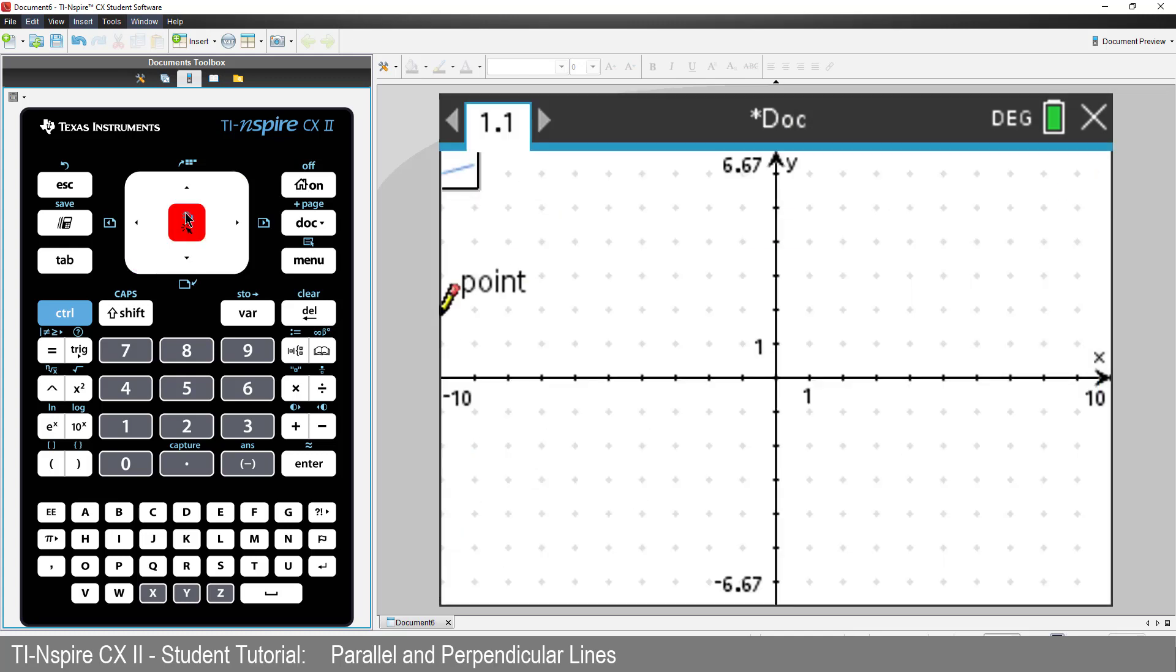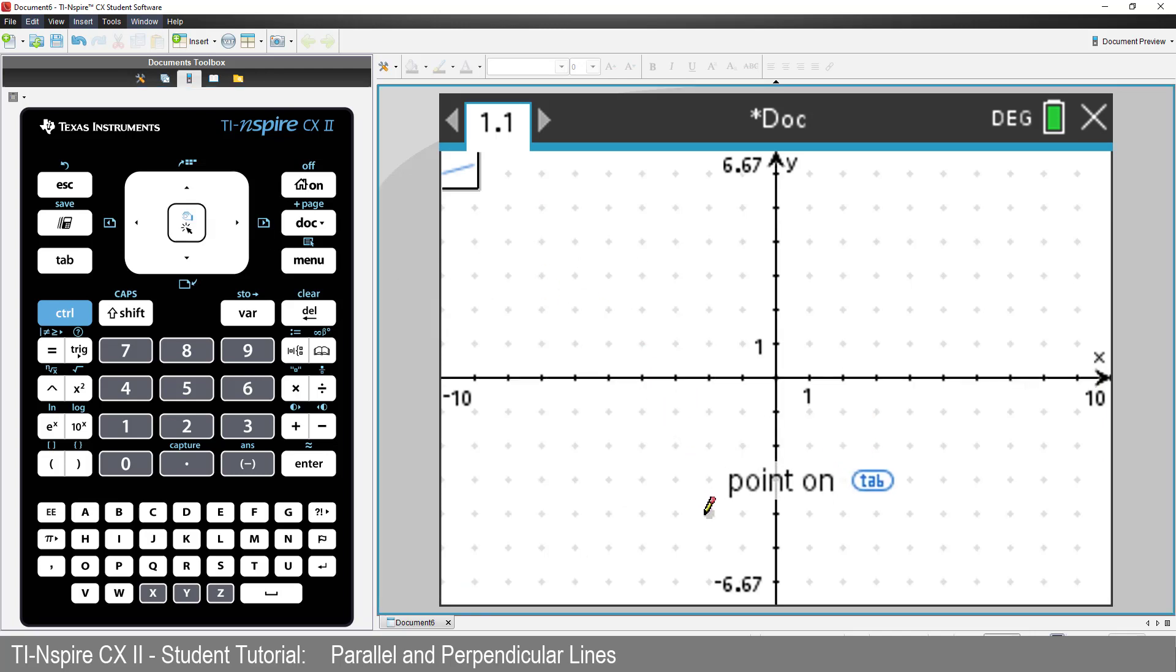Notice that our cursor has changed to a pen. Place the cursor over a point on the grid and click. Now place the cursor over another point and click. Then press Escape to release the Line tool.